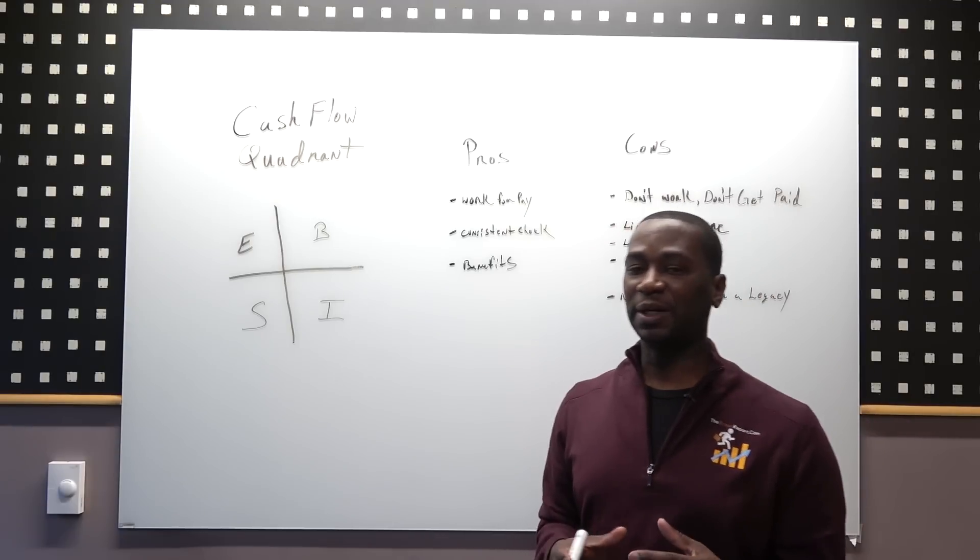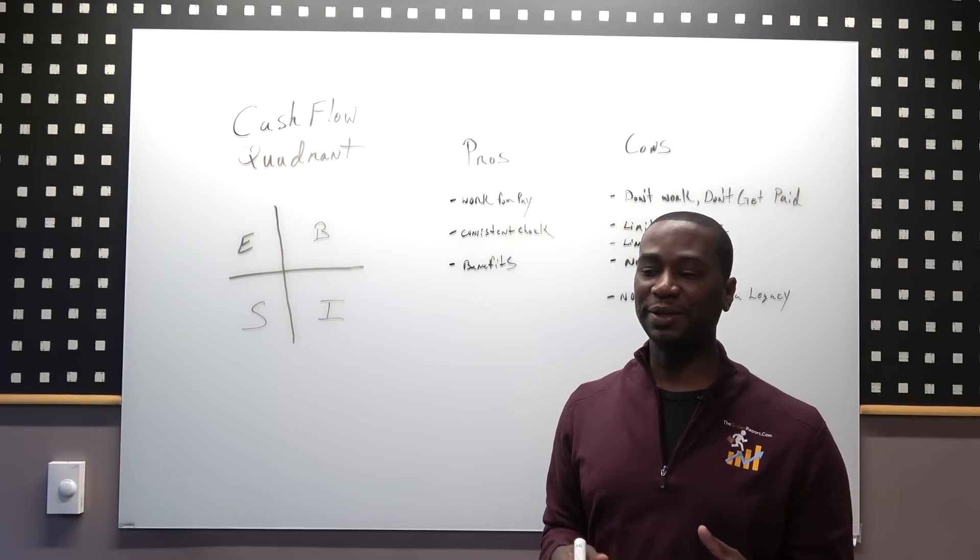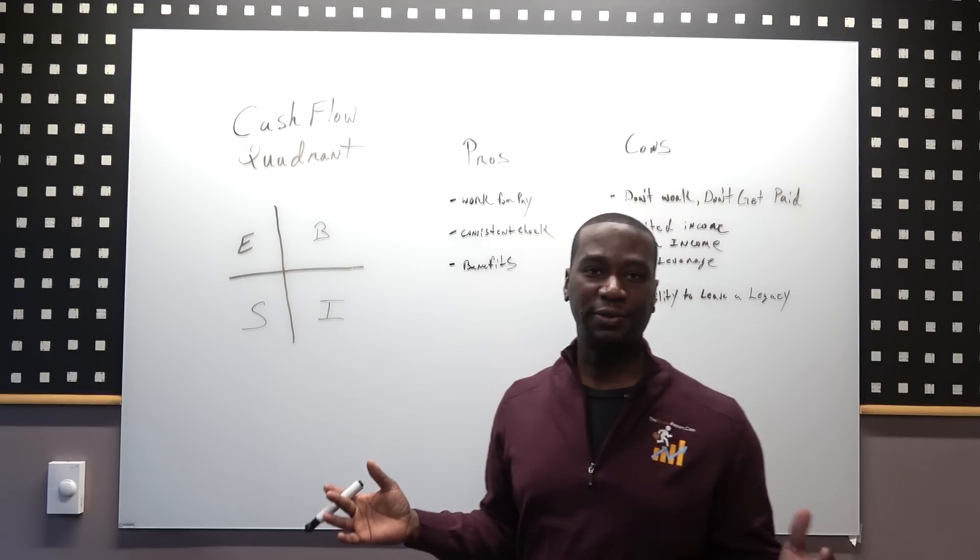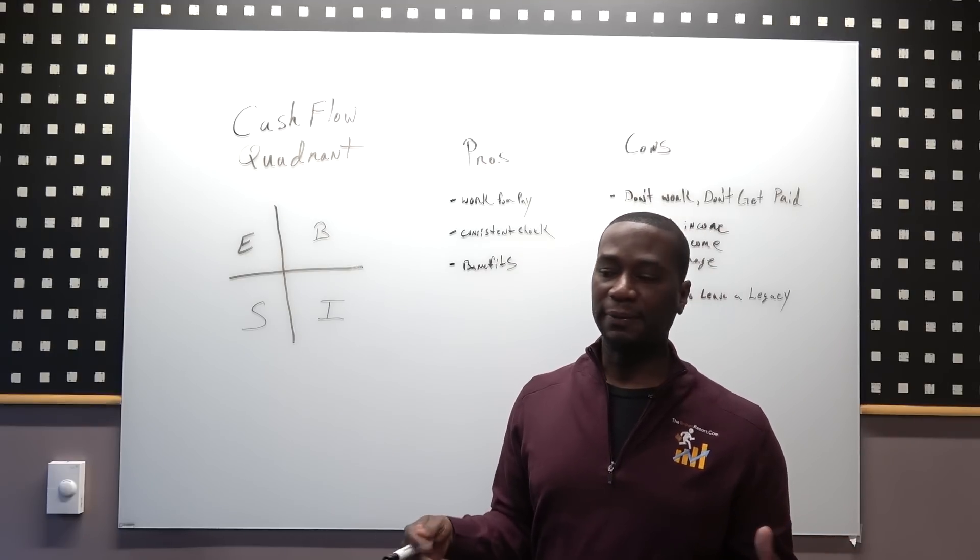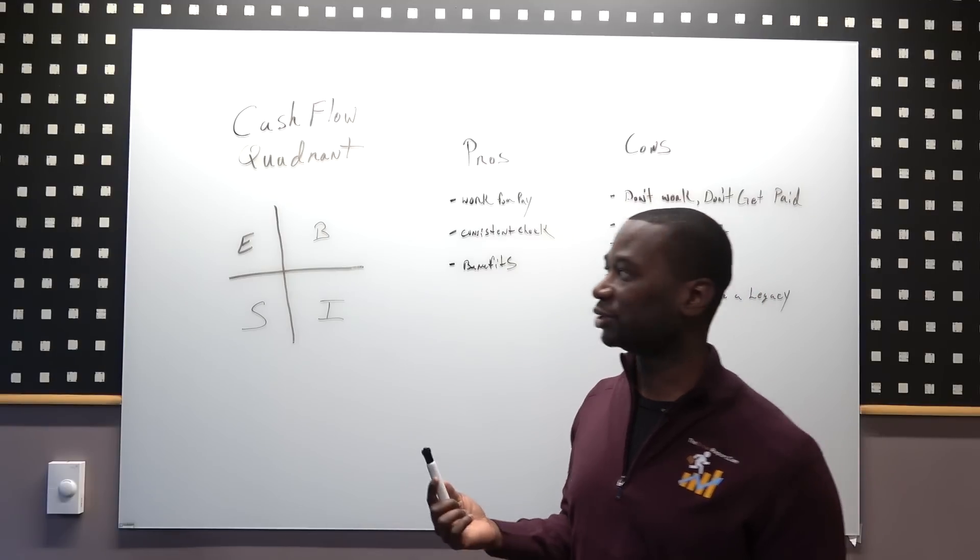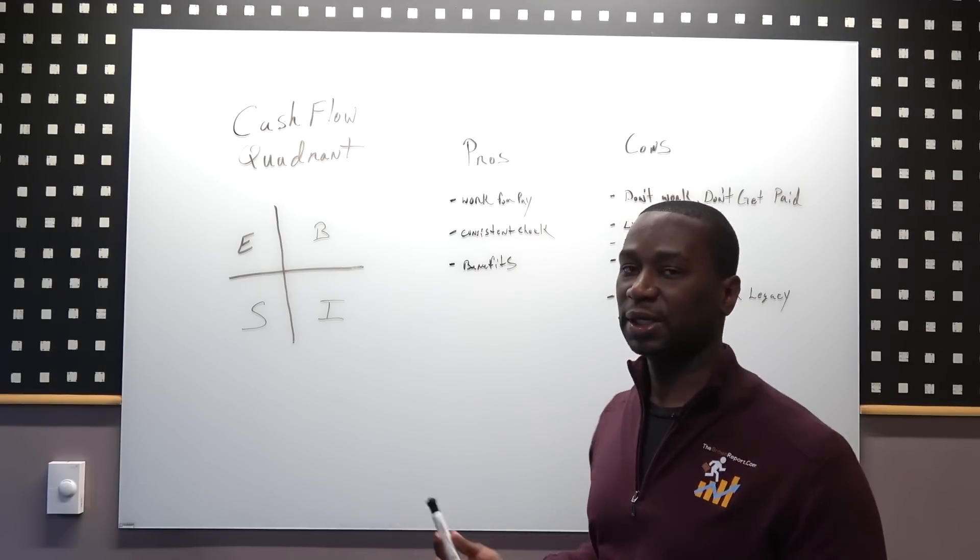I don't think many people understand the cash flow quadrant or have even heard of it. Robert Kiyosaki, author of Rich Dad Poor Dad, is credited with coming up with the cash flow quadrant. When you look at what it is, it's basically four quadrants that you can make income in.